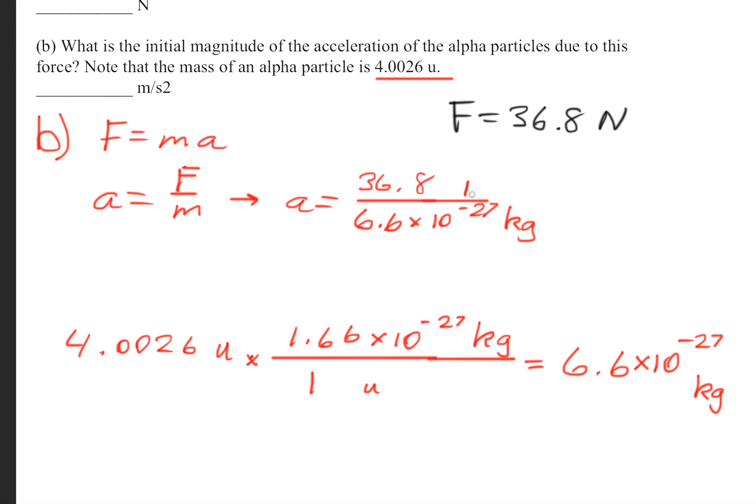And this is newtons on top. We get that the acceleration is 5.54 times 10 to the 27 meters per second squared. And this makes sense because these particles should be traveling extremely fast, so this number is consistent with what we would find experimentally.